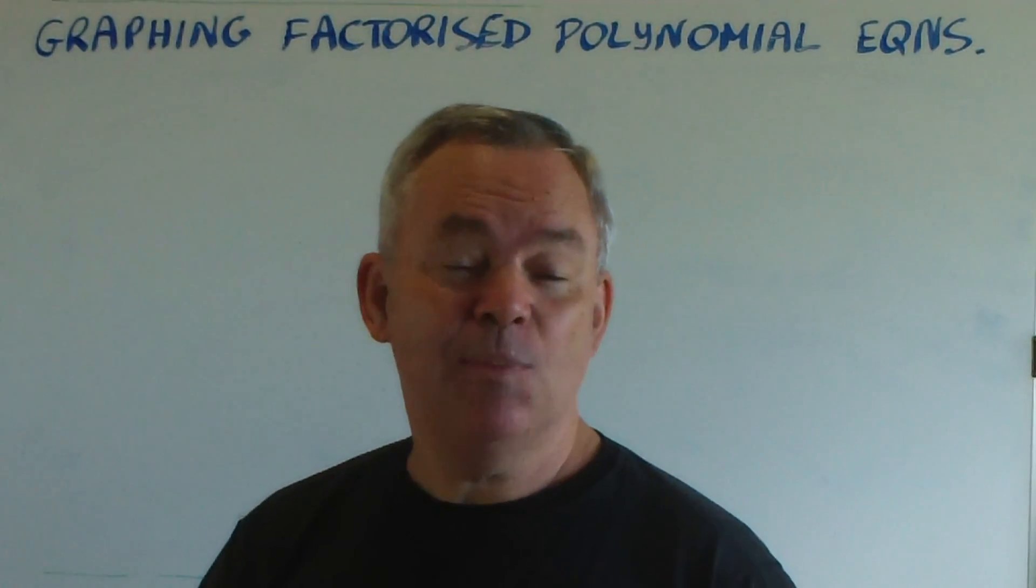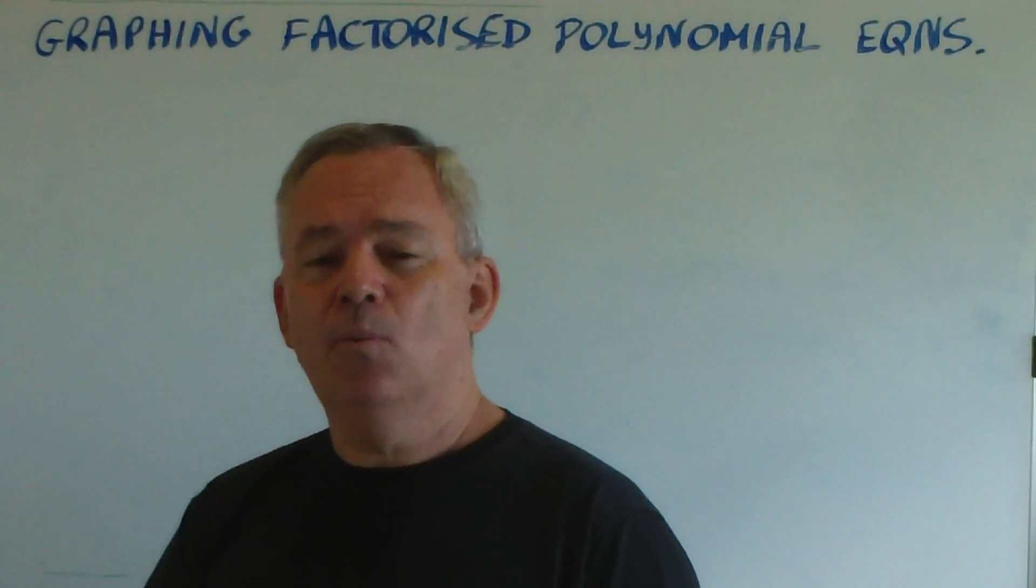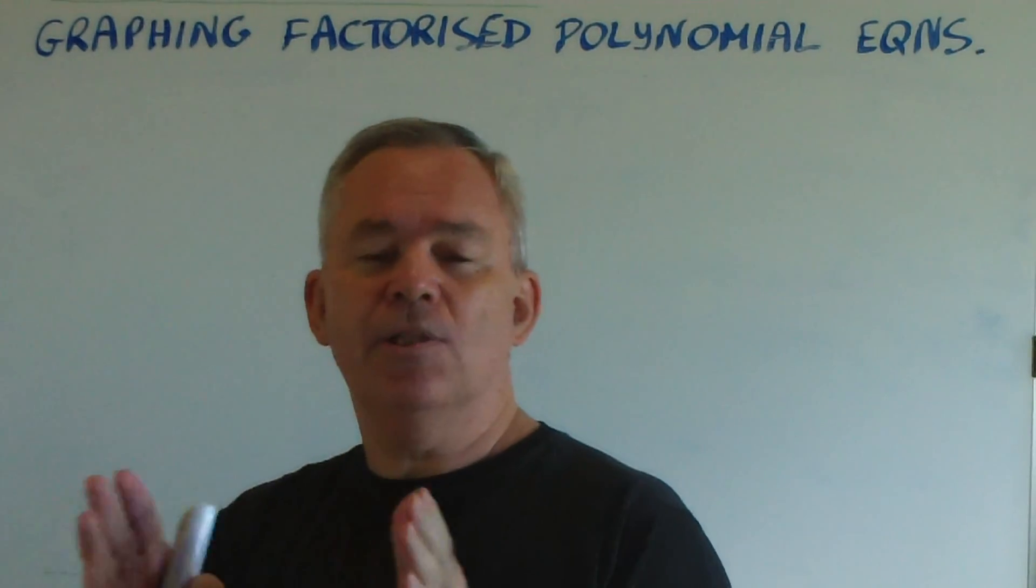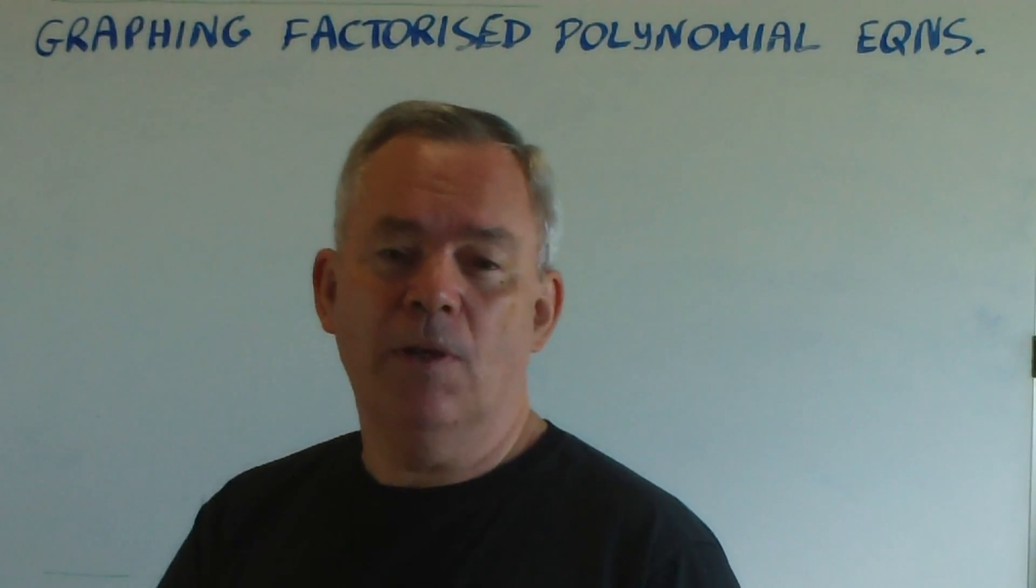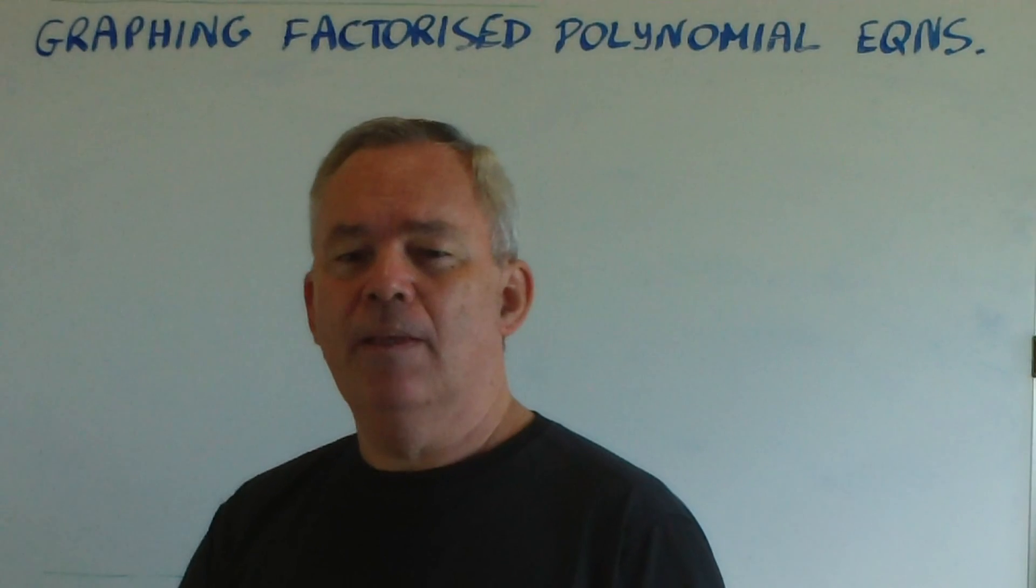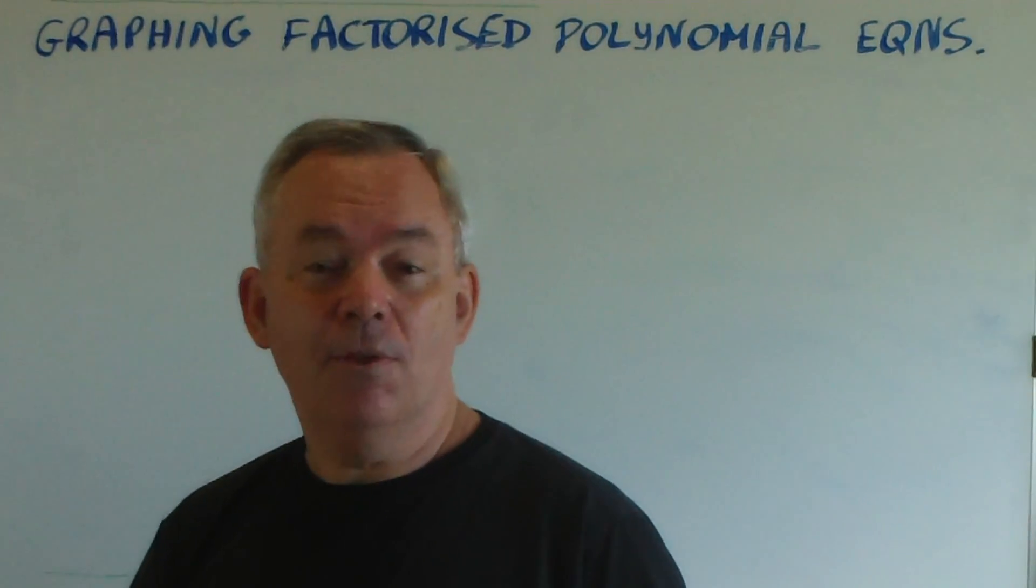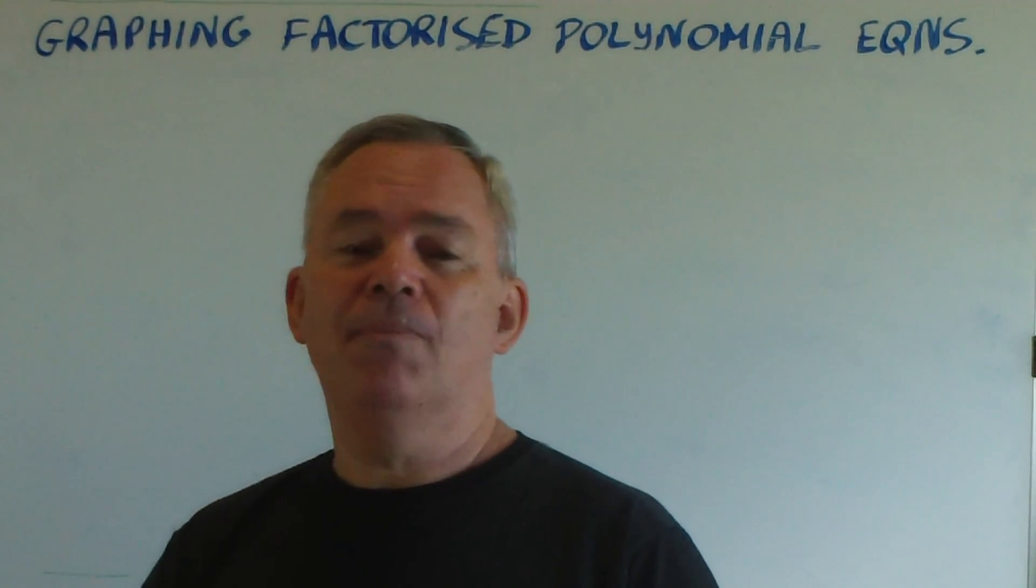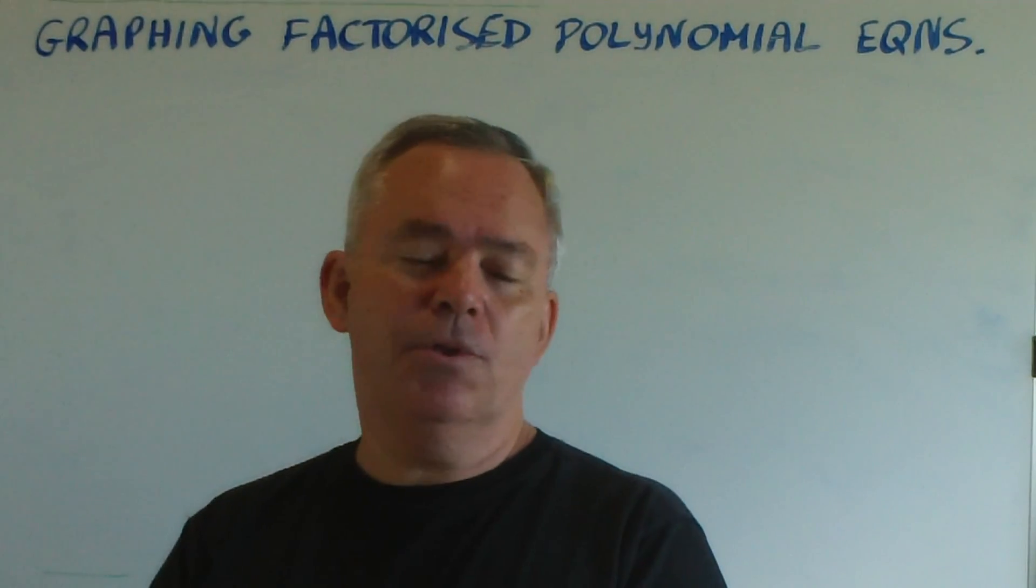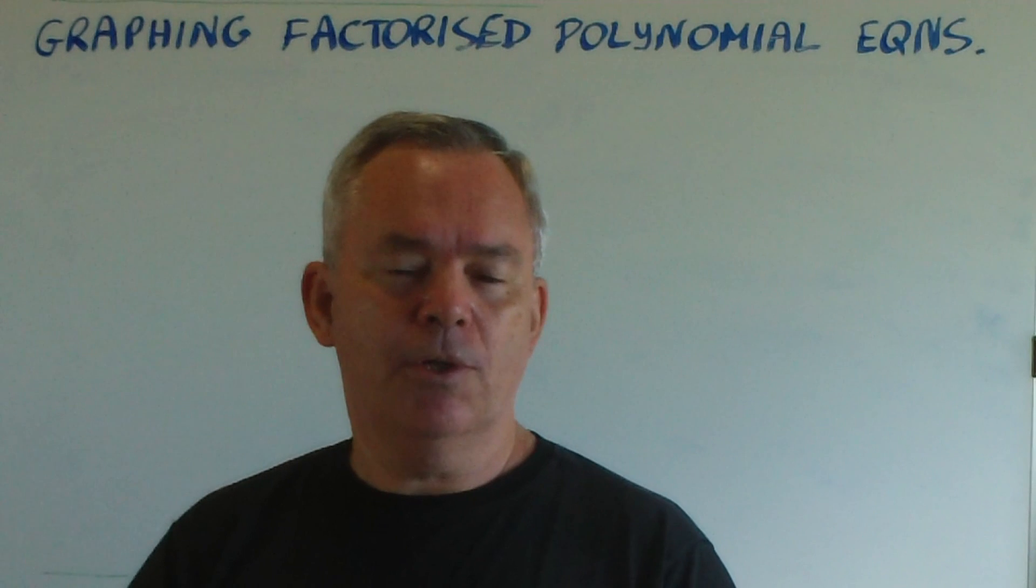When graphing a polynomial that has been factorised, what does it mean if one of the factors is repeated, or even if more than one factor is repeated? That's what I want to explain in this video, where I discuss the third variation on my theme of how to use the roots of polynomials in order to graph them.